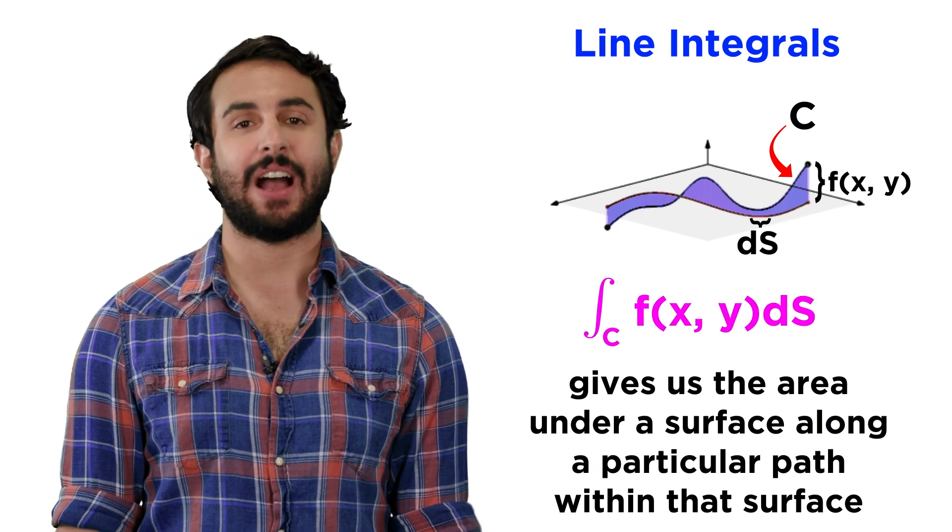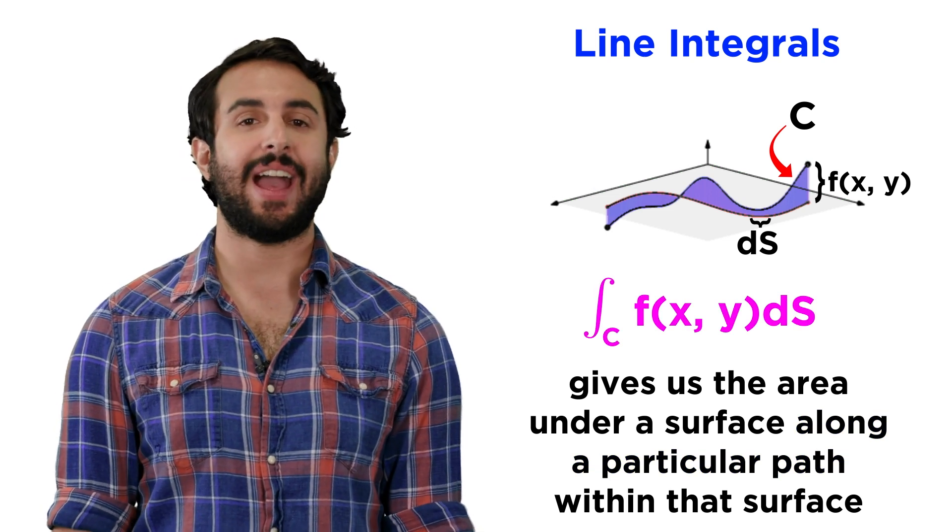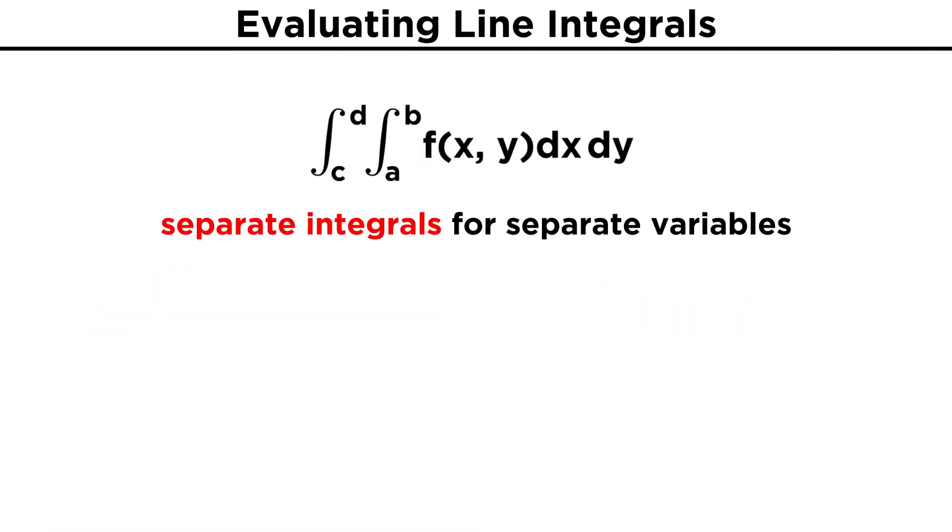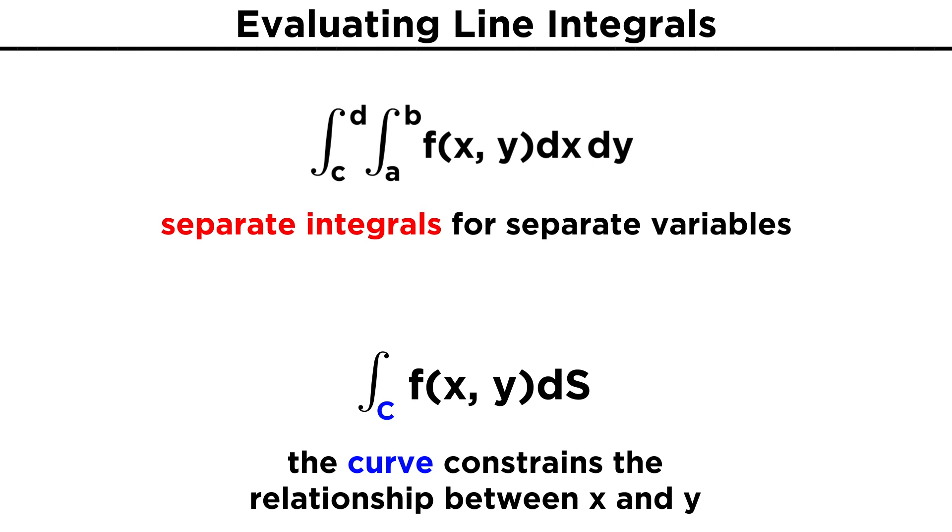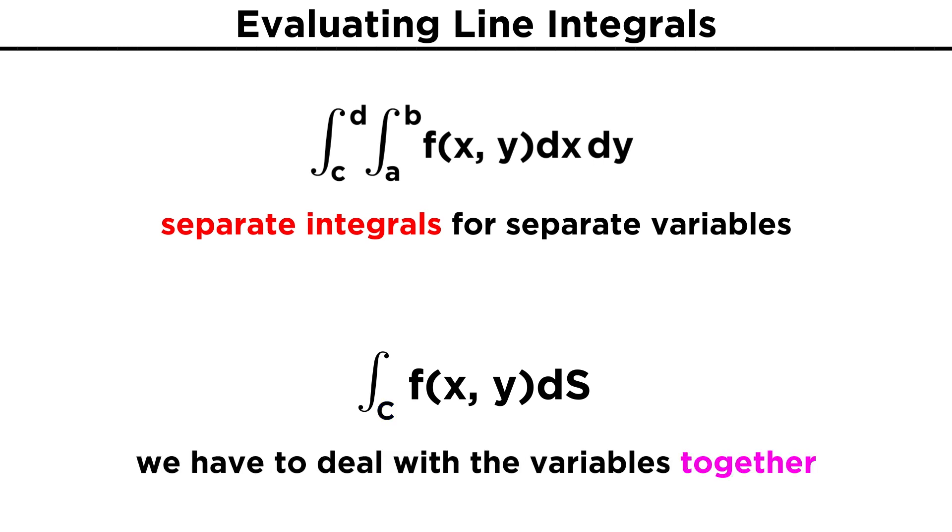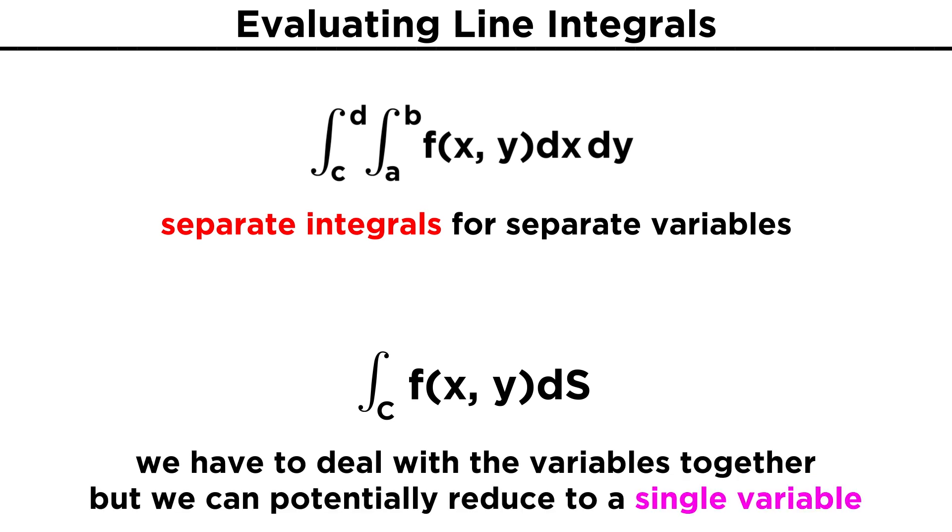The way we will write this out is the integration along C of f of x y ds. Recall that when we learned how to evaluate multiple integrals, the x and y variables were treated independently during the integration, but now with line integrals we have a single integral with both x and y. We must keep in mind that the curve we are integrating along constrains the relationship between the two variables. Because of this, we can no longer treat them independently, but this also opens up the possibility of reducing things to a single variable that is to be integrated.